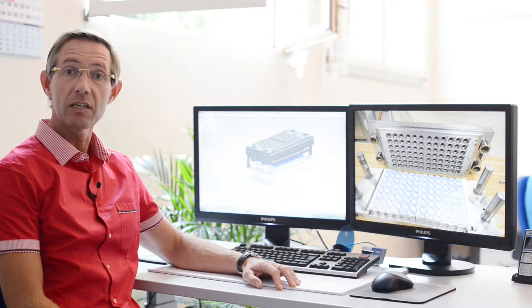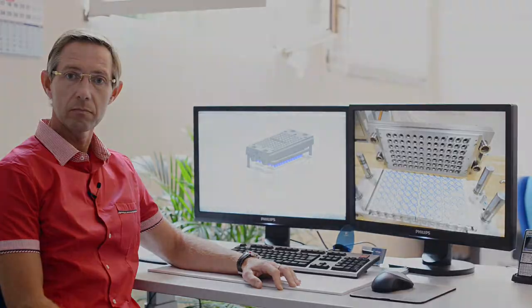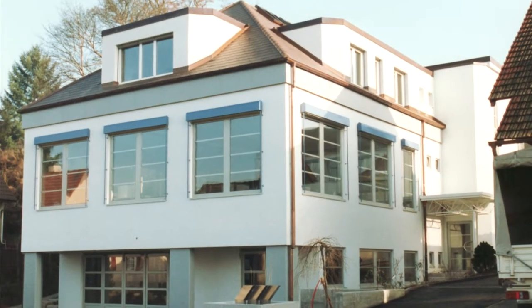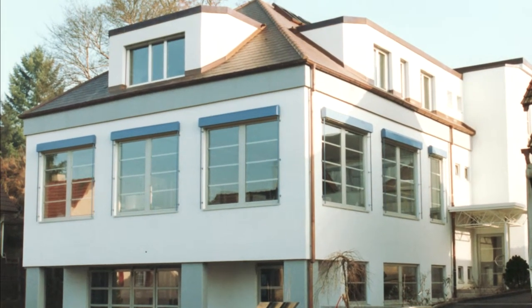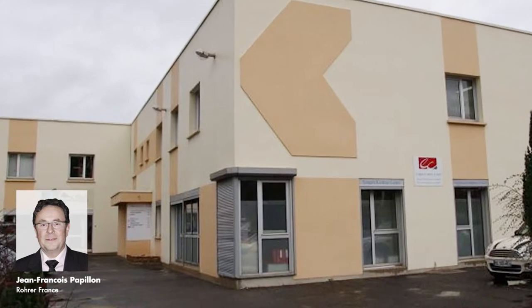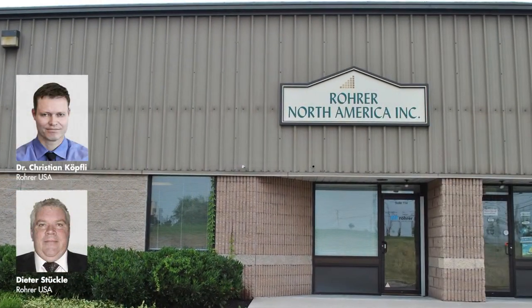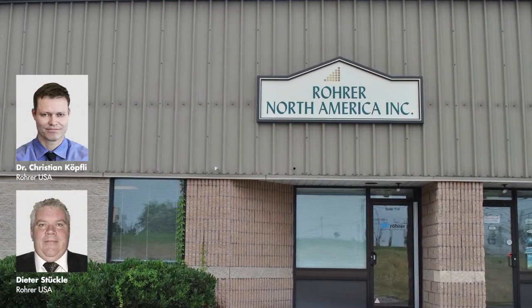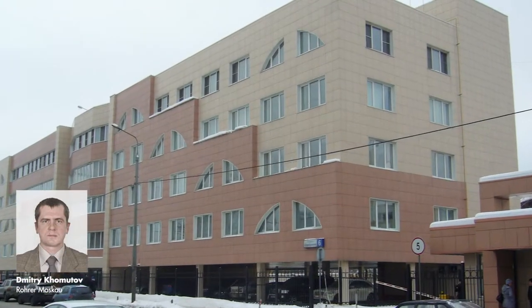This is only one aspect of our leading solutions. Today Rohrer Group has around 70 employees at our sites Mölin and Rheinfelden, as well as the daughter companies in France, USA and Russia. 95% of all products are exported.